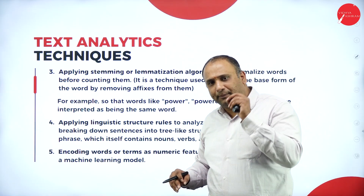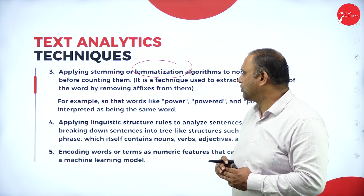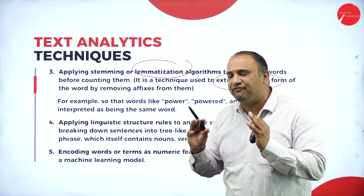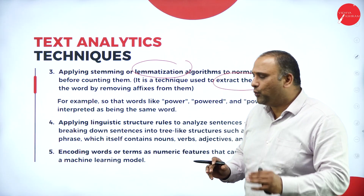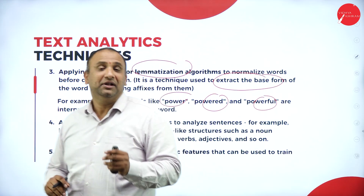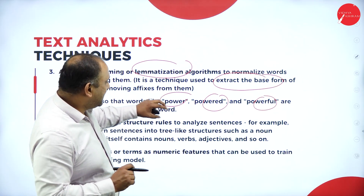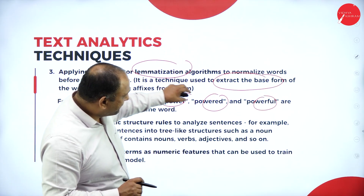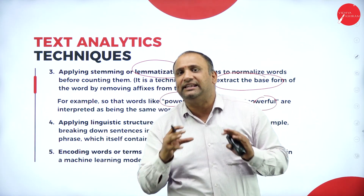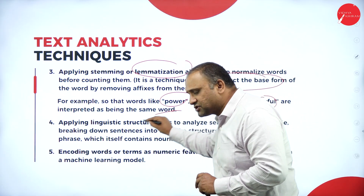We also apply stemming or lemmatization algorithms to normalize words before counting them. This is a technique to extract the base form of a word by removing affixes. For example, the words 'power,' 'powered,' and 'powerful' are interpreted as the same base word, though their meaning changes in a sentence. We keep the base word and remove all the other factors.